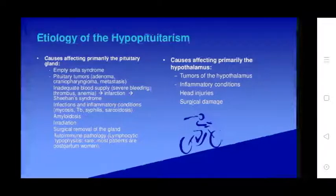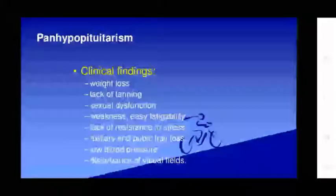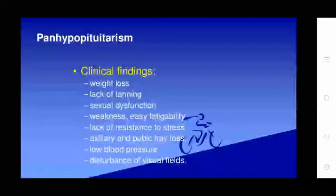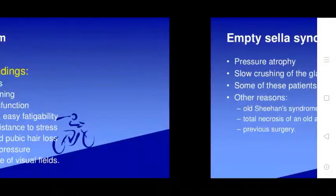Causes affecting primarily the hypothalamus include tumors, inflammatory conditions, head injury, and surgical damage. Clinical findings of hypopituitarism include weight loss, lack of libido, sexual dysfunction, weakness, easy fatigability, lack of stress resistance, and loss of axillary and pubic hair, as well as low blood circulation and distortion of visual fields.